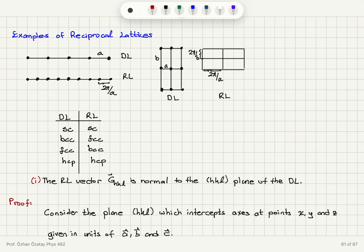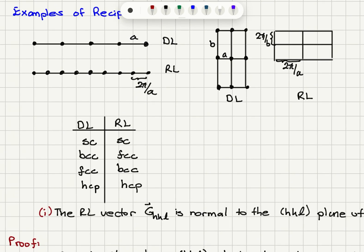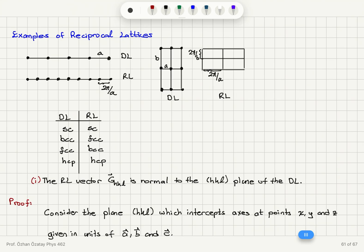We continue with examples of reciprocal lattices. For a one-dimensional direct lattice with lattice constant a, the reciprocal lattice is also one-dimensional with lattice constant 2π/a. For a rectangular lattice with sides a and b, the reciprocal lattice is rectangular with sides 2π/b and 2π/a. For simple cubic, body-centered cubic, face-centered cubic, and hexagonal close-packed structures: simple cubic maps to simple cubic, BCC maps to FCC, FCC maps to BCC, and hexagonal close-packed maps to hexagonal close-packed.